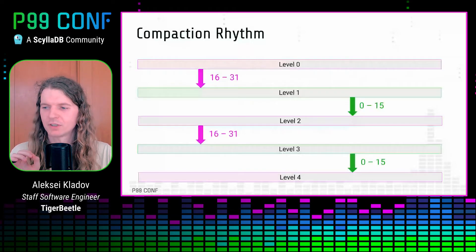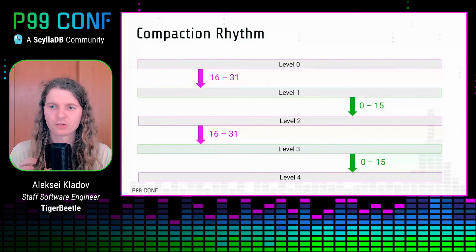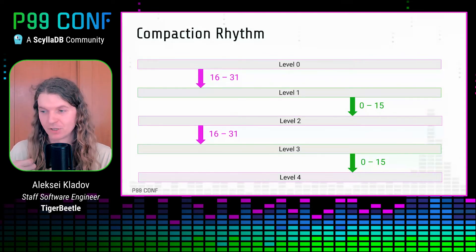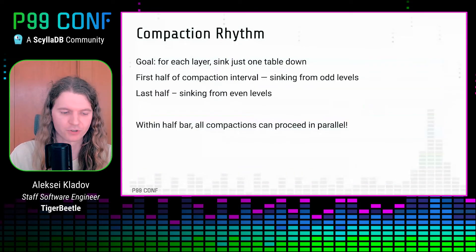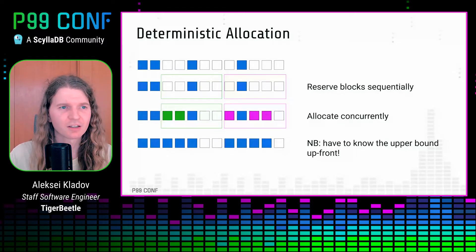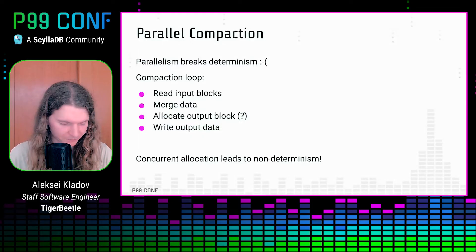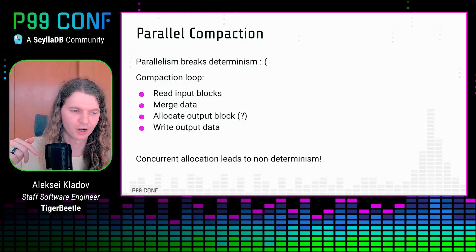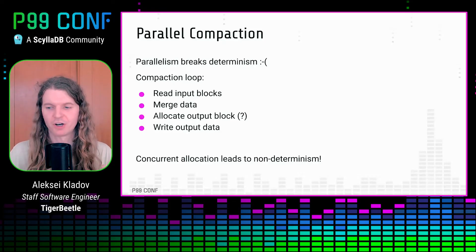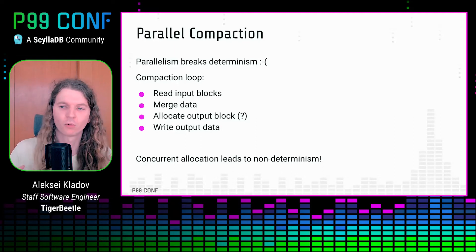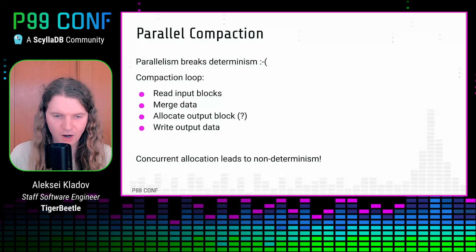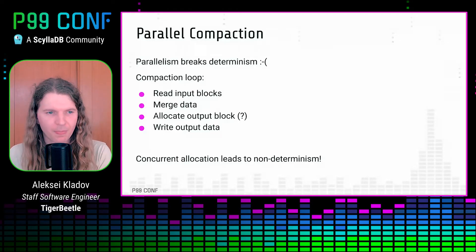Looking at this picture, note that there is a lot of latent parallelism. Compaction from level 0 to level 1 and compaction from level 2 to level 3 could proceed in parallel because they are disjoint. We really do want to take advantage of this parallelism to make the compaction process fast. But herein lies the problem: parallelism in general is non-deterministic. If you just run these two compactions in parallel, they will race with each other and the actual result on disk might depend on the order of compactions. Again, this is something we don't want because we need determinism to enable physical repair. So the question is: how can we make compaction parallel but still deterministic?